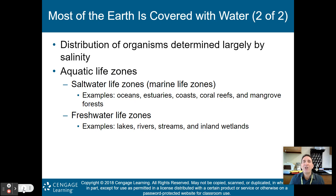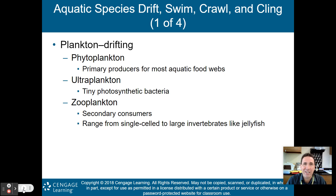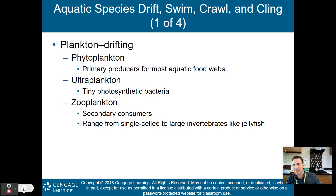Freshwater life zones, where water doesn't have salt, include lakes, rivers, streams, and inland wetlands. Species in the water will either drift, swim, crawl, or cling — those are the four ways that most ocean-dwelling organisms get around.